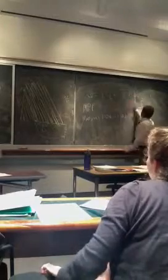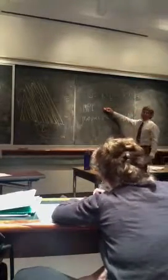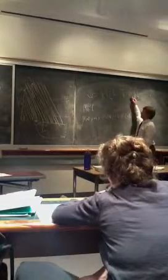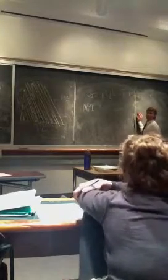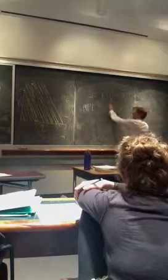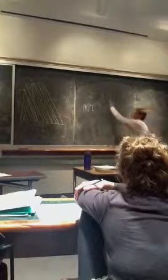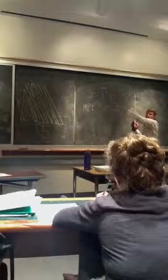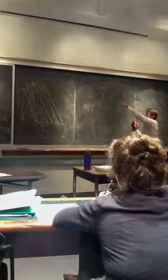If you want to find the marginal product of labor, rather than the production of all the workers together, you hold capital constant at some level, and then you take the derivative with respect to labor, the partial derivative with respect to labor. You hold capital constant, you don't change it, and then you see how does quantity vary as we vary labor?